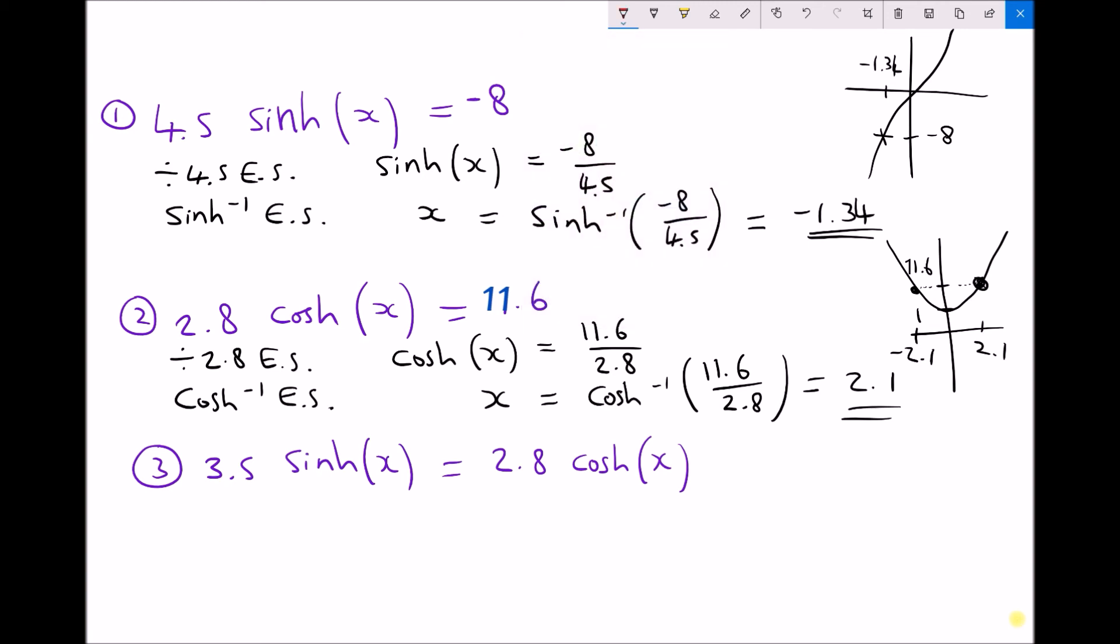We can check that by going to our original function, 2.8 cosh(x). But instead of 2.1, I'm going to put in negative 2.1. And when I run that through the calculator, I get an answer of 11.6 as expected. So as with our trigonometric functions, we can use our graphs or sketches of our graphs to make sure that we have all of the solutions in the given limit.